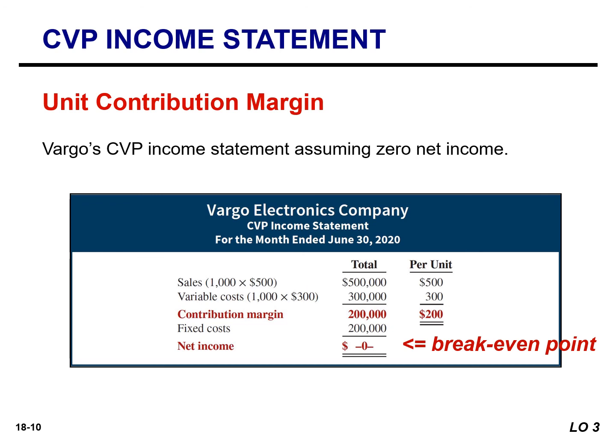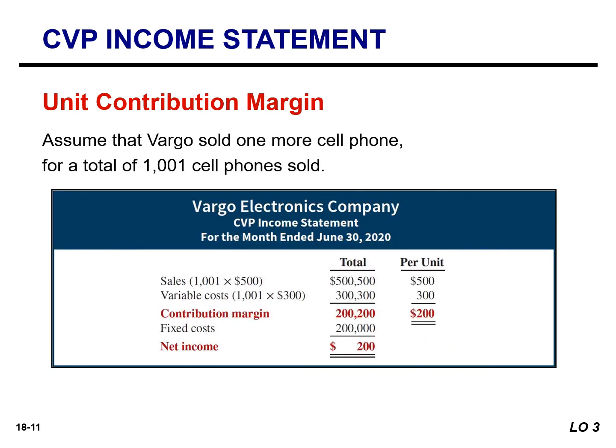At the break-even point, total variable plus fixed costs equal total revenue. For every cell phone sold above the break-even point of 1,000 units, net income increases by the unit contribution margin of $200. If Vargo sells 1,001 cell phones, net income is $200. If they sell two above the break-even point of 1,000, they report net income of $400.